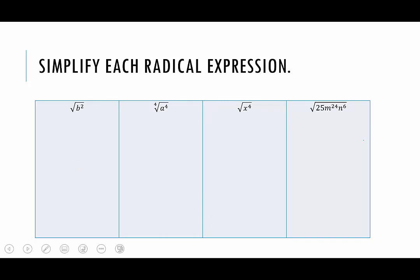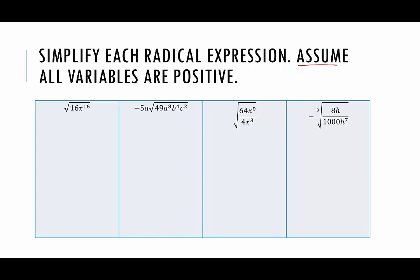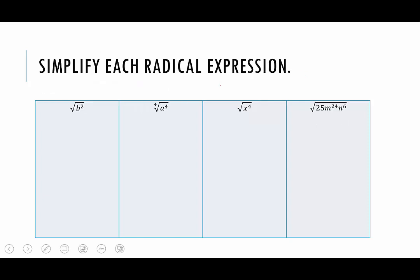Now we're going to look at some variables and integers. This slide says simplify each radical expression, and it does not say to assume all variables are positive, so we cannot make that assumption. The square root of b squared: since we don't know whether b is positive or negative or zero, the square root of b squared is the absolute value of b. The fourth root of a to the fourth: same thing — since raising a to the fourth would turn a negative positive, we again get the absolute value of a.